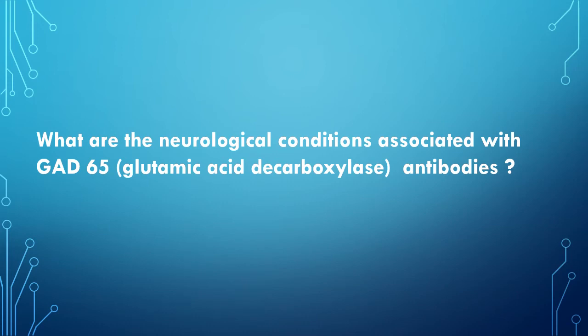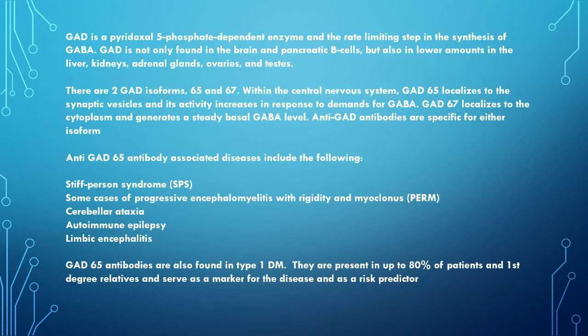What are the neurological conditions associated with GAD-65 or glutamic acid decarboxylase antibodies? GAD is a pyridoxal 5-phosphate dependent enzyme and the rate-limiting step in the synthesis of GABA. GAD is found not only in the brain and pancreatic beta cells, but also in lower amounts in the liver, kidneys, adrenal glands, ovaries, and testes. There are two GAD isoforms, 65 and 67, within the central nervous system. GAD-65 localizes to synaptic vesicles and its activity increases in response to demands for GABA. GAD-67 localizes to the cytoplasm and generates a steady basal GABA level. Anti-GAD antibodies are specific for either isoform.